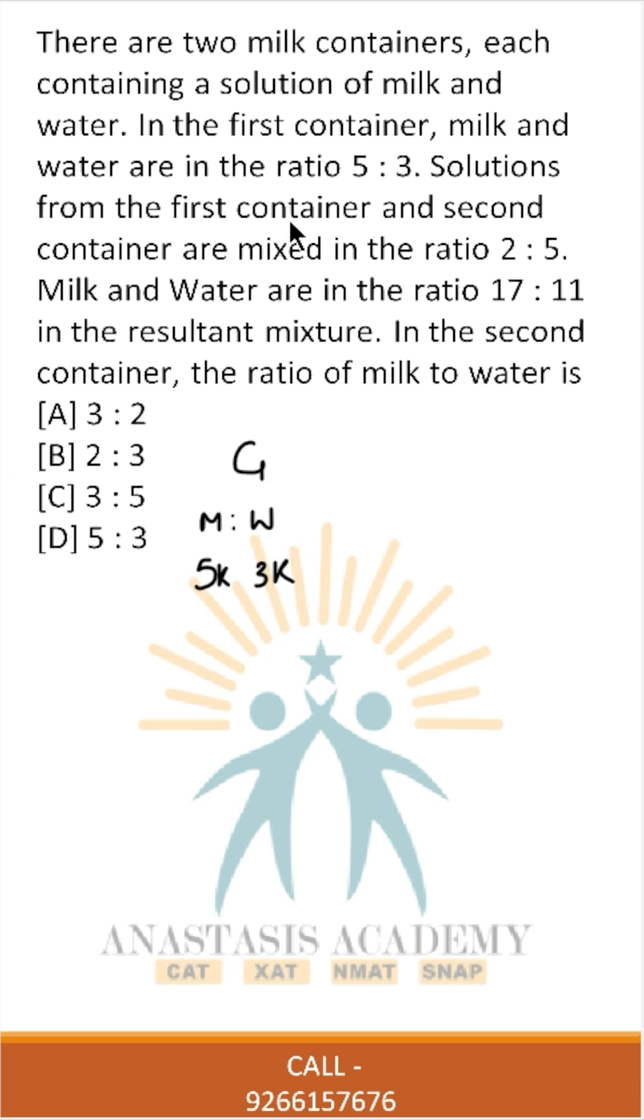Solutions from the first container and second container are mixed in the ratio 2 is to 5. So if I take 8k from here, which is 2 units, I will take from container 2, I will take 20k. The ratio will be 2 is to 5.